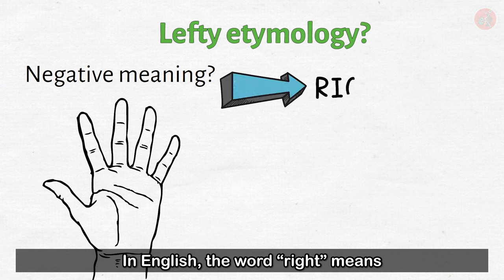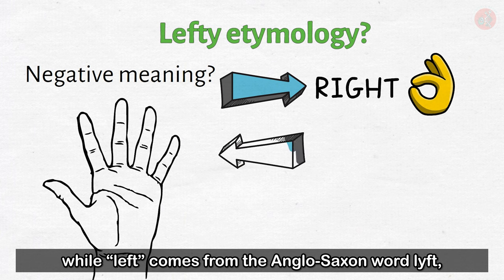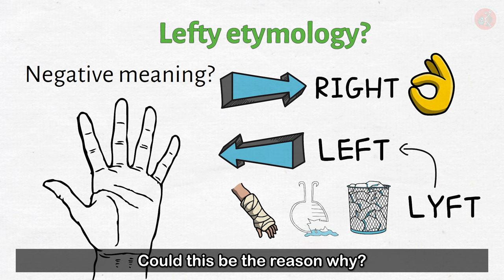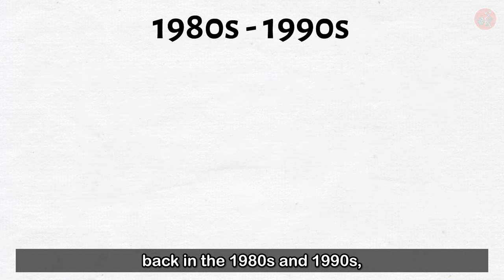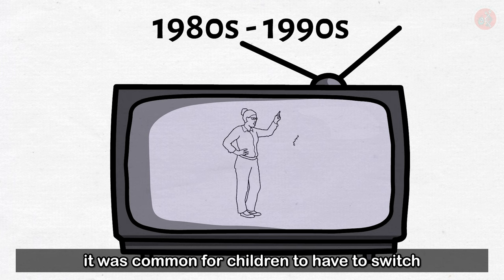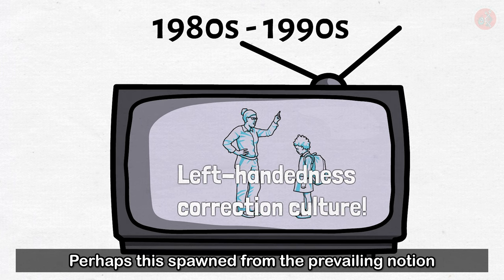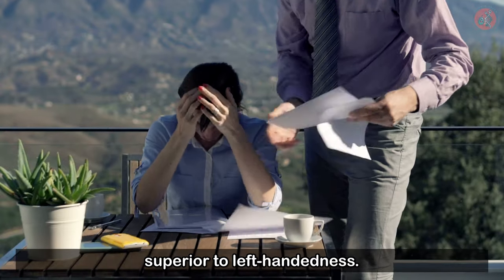In English, the word right means morally good, justified, or acceptable, while left comes from the Anglo-Saxon word lift, which means weak or foolish. Could this be the reason why? While lefty discrimination seems to be rare these days, back in the 1980s and 1990s, it was common for children to have to switch from left-handedness to right-handedness. Perhaps this spawned from the prevailing notion that right-handedness was in some ways superior to left-handedness.